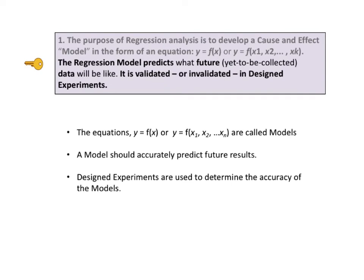The second part of key number one says the regression model predicts what future, that is yet to be collected, data will be like. It is validated or invalidated in design experiments. The equation y = f(x) or y = f(x1, x2, ...) is called a model. A model should accurately predict future results.